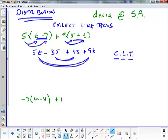These numbers are collectible. So the negative 35 and the positive 45 make a positive 10 sum and the 5t and the 9t make a 14t. This is our final answer.